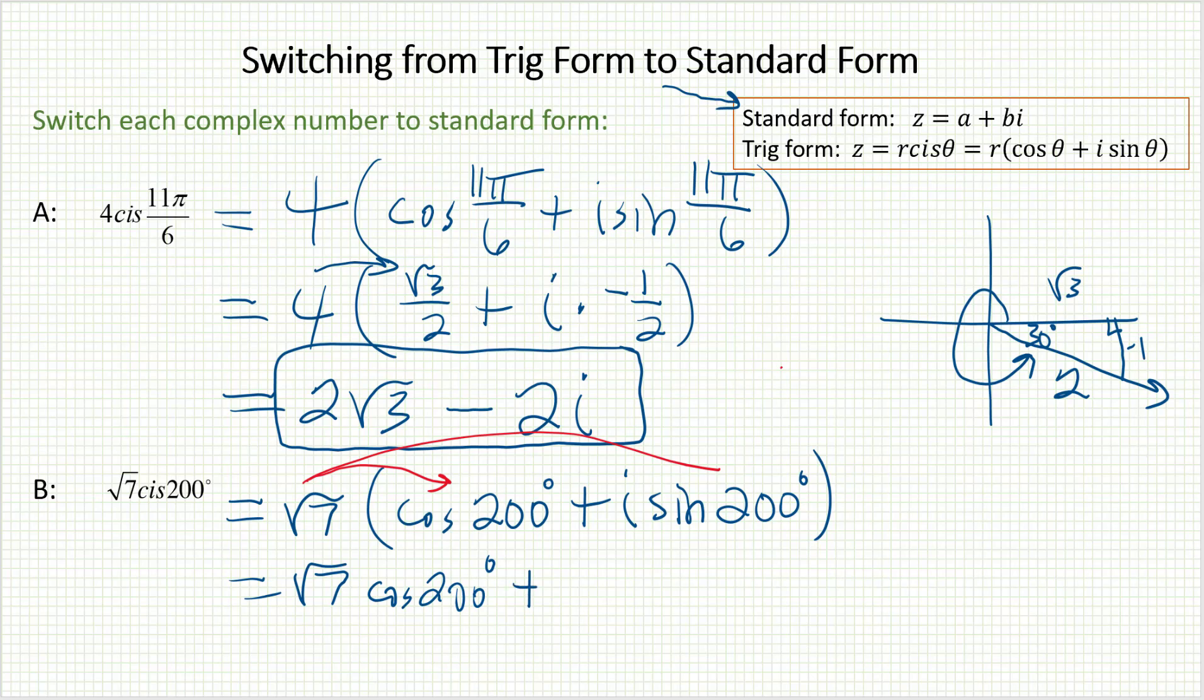My real part is going to end up being √7 times cosine 200 degrees. And my imaginary part is going to end up being √7 times sine of 200 degrees. And of course, this one will have the i with it.